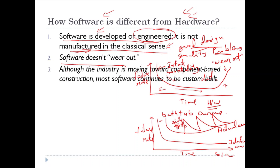The third difference is that although the industry is moving toward component-based construction, most software continues to be custom-built. In the hardware world, component reuse is a natural part of the engineering process. But in the software world, it has only begun to be achieved on a broader scale. So most software continues to be custom-built, and this is how hardware differs from software.